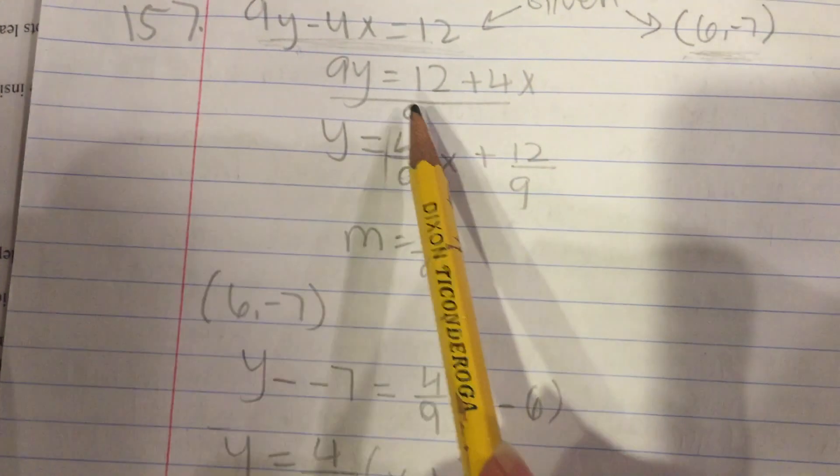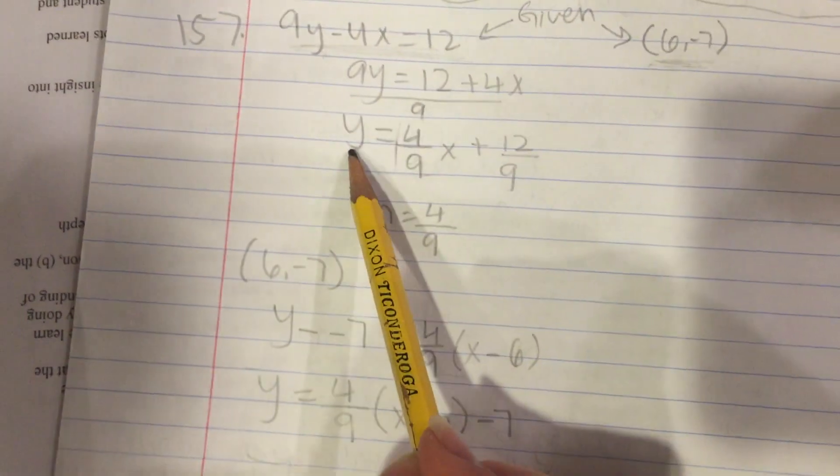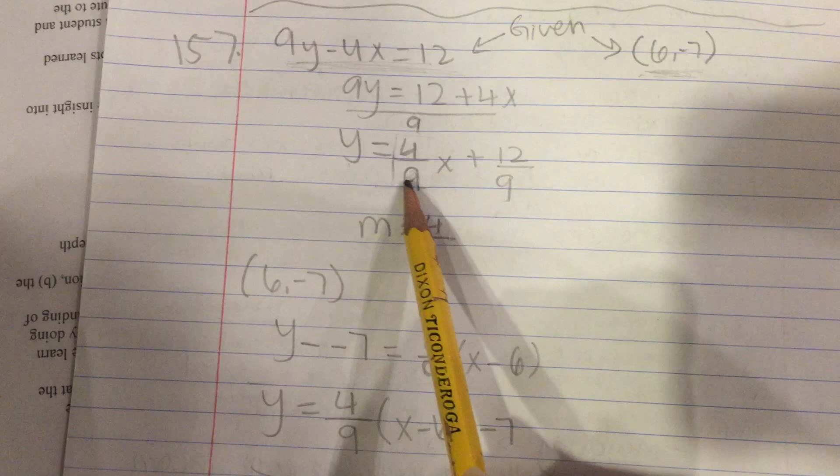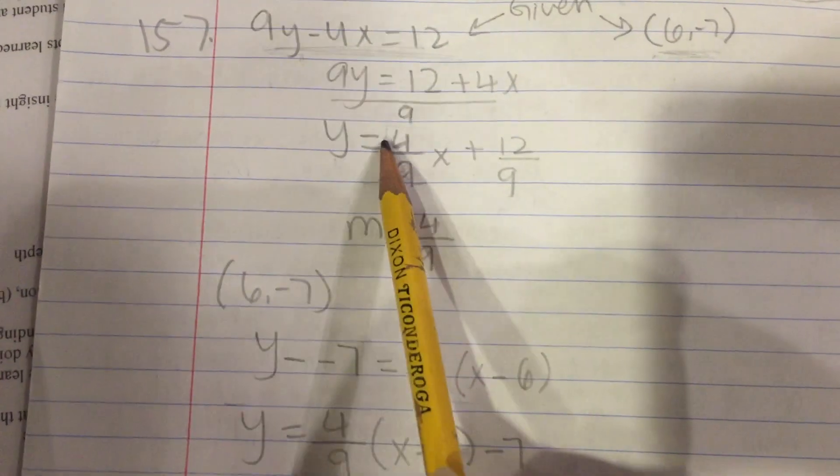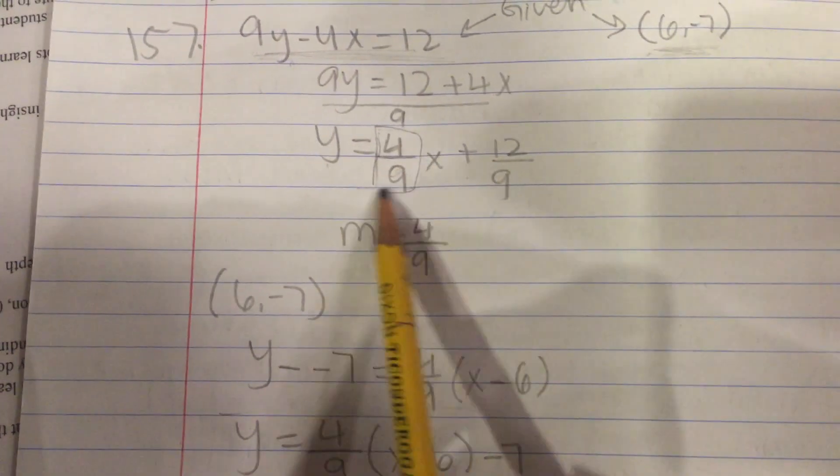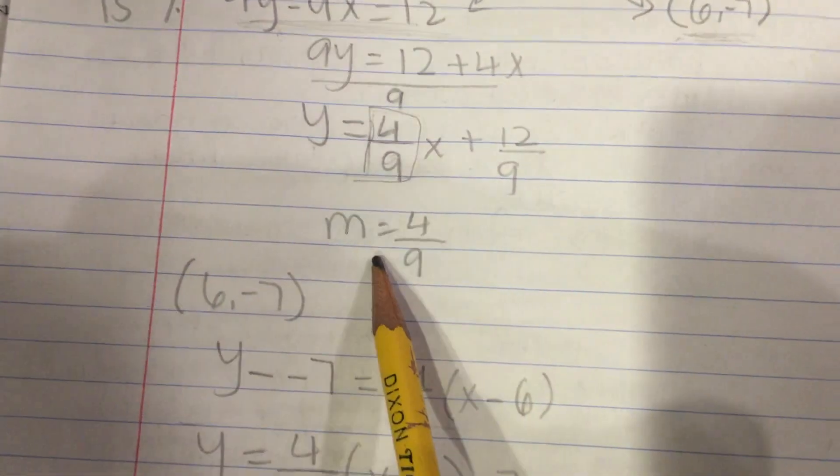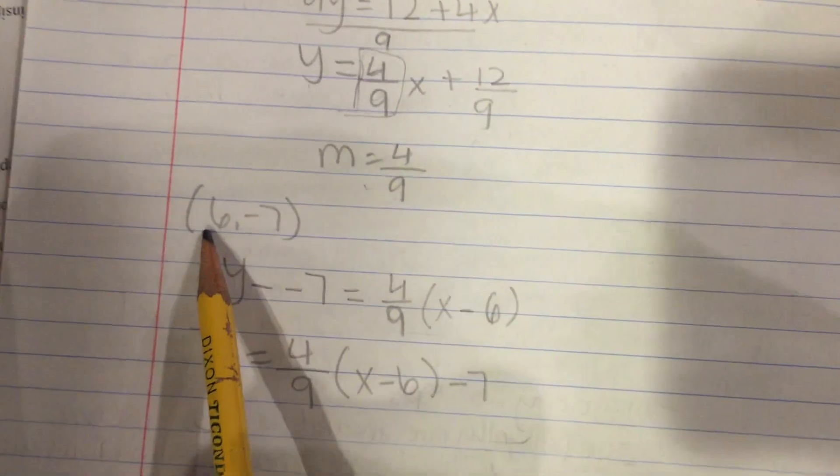Then you divide the equation by 9 to get y alone, so y equals 4/9 x plus 12 over 9. We only care about the slope, which is 4/9. That's going to be our slope for our equation with the point (6, -7).